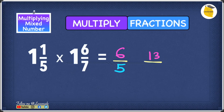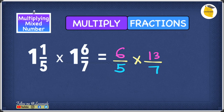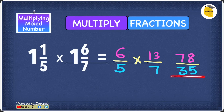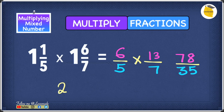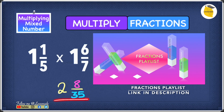Step two is to multiply both improper fractions. 6 times 13 gives you 78, and 7 times 5 gives you 35, so we have 78 over 35. The final step is to convert 78 over 35 into a mixed number: you get 2 as the whole number, 8 as the numerator, and 35 as the denominator — so the answer is 2 and 8 over 35.